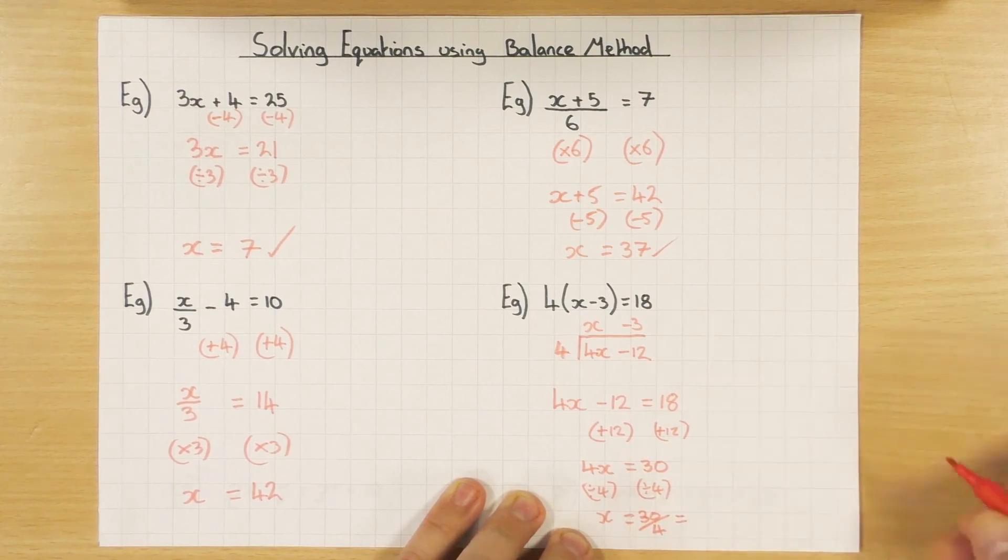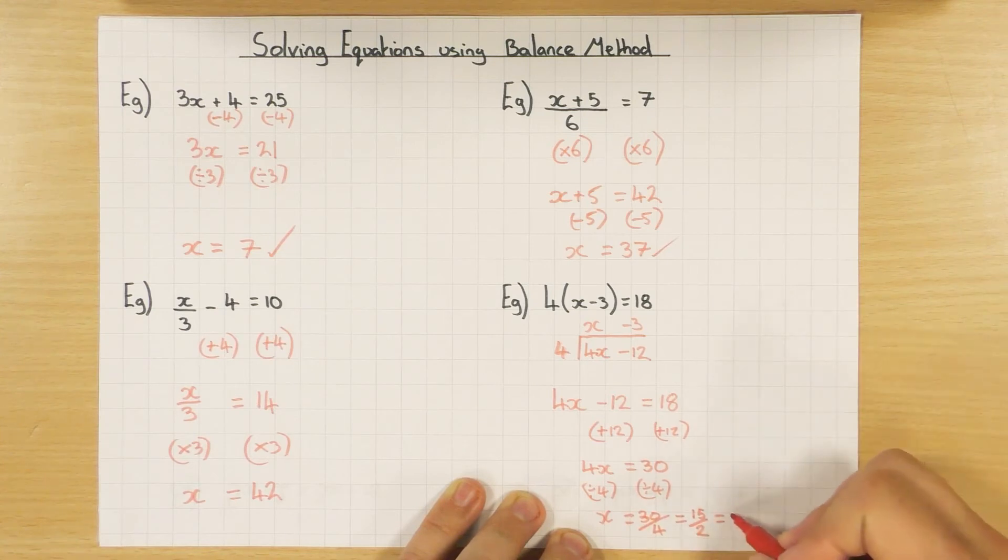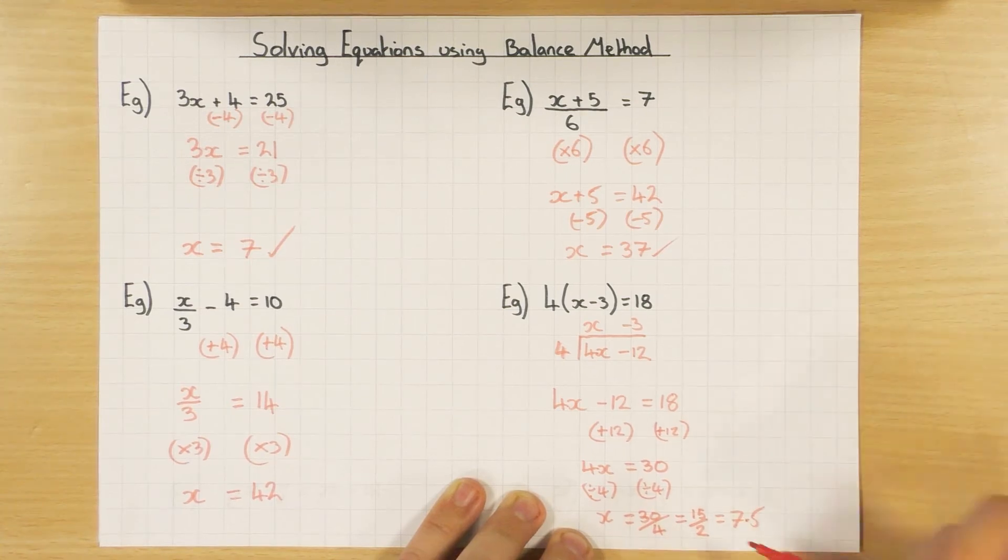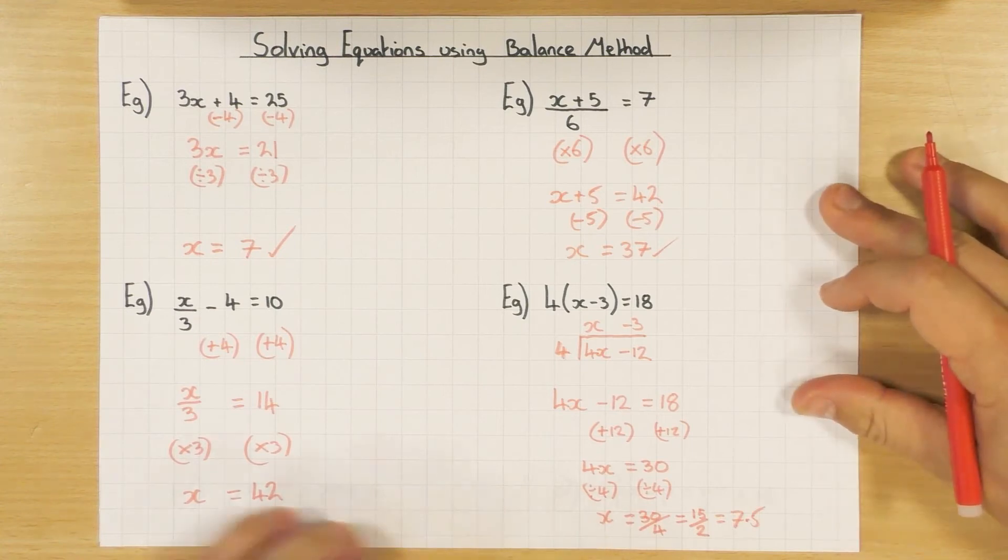Now, when you get something like this where it's not a whole number, they're more than happy for you to leave it as a fraction. So in this case, 30 divided by 4. But I would always try and simplify it. And if you can, put it as a decimal. So obviously this one I can simplify to be 15 over 2 by dividing both top and bottom by 2. And then just doing 15 divided by 2 is a half of 15. There's obviously 7.5. You can leave it as a fraction. But obviously ones like that, I would definitely tend to try and simplify them and put them in a decimal if you can.